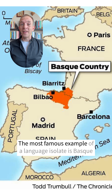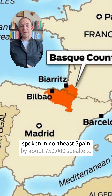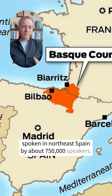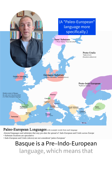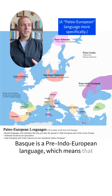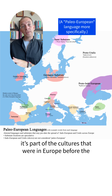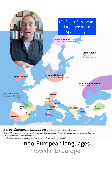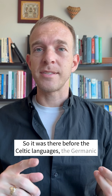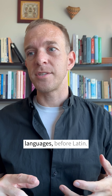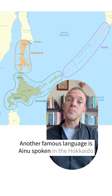The most famous example of a language isolate is Basque, spoken in northeast Spain by about 750,000 speakers. Basque is a pre-Indo-European language, which means it's part of the cultures that were in Europe before the Indo-European languages moved in — so it was there before the Celtic languages, the Germanic languages, before Latin.